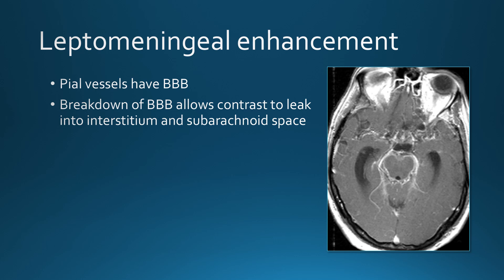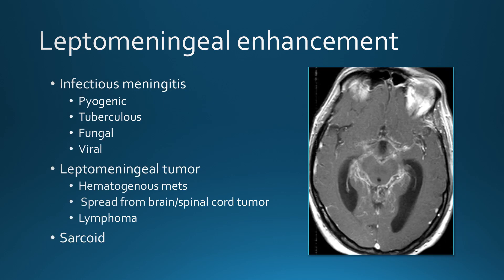Leptomeningeal enhancement is a bit different. The leptomeningeal vessels do have a blood-brain barrier, so we will only see leptomeningeal enhancement when there's breakdown of the blood-brain barrier that allows contrast to leak into the interstitium of the brain and into the subarachnoid space. We can see it in infection — infectious meningitis, whether pyogenic, tuberculous, fungal, or rarely viral. Leptomeningeal tumor can be hematogenous metastases to the subarachnoid space or spread from a brain or spinal cord tumor. Lymphoma can also cause leptomeningeal enhancement, and sarcoid can cause both pachymeningeal and leptomeningeal enhancement.